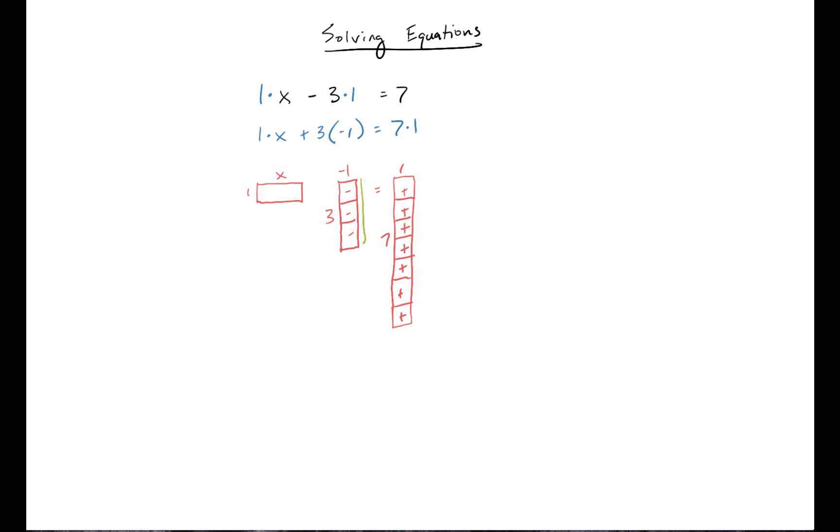Well, I can use opposites to do that. I know that each one of those negatives will cancel with one positive, but if I add three positives to one side, I have to do it to the other. And then I can go ahead and cancel out each of the opposites, leaving me with no more of those negative ones on the left side.